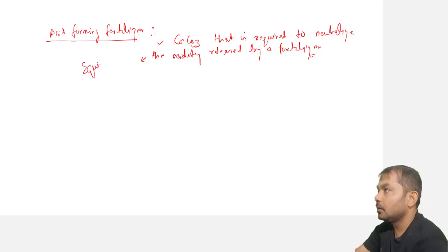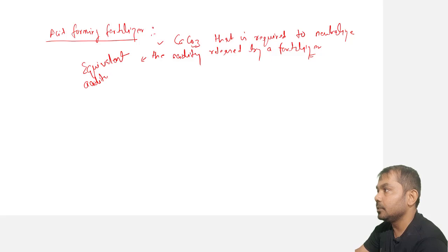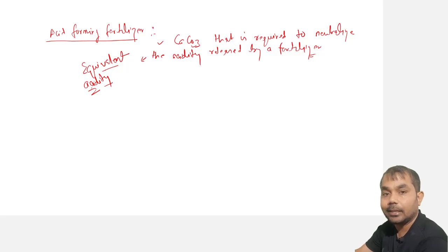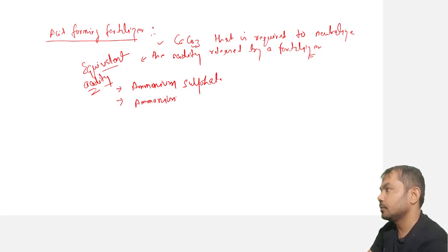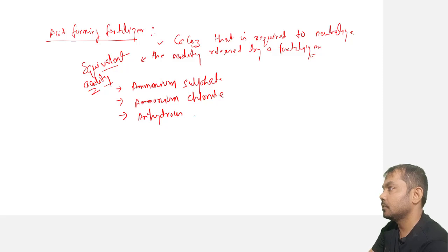Fertilizers that liberate acid can be characterized by their equivalent acidity. Fertilizers with higher equivalent acidity are more acid forming. Examples of acid forming fertilizers include ammonium sulfate, ammonium chloride, anhydrous ammonia, and urea.